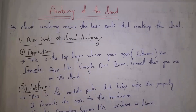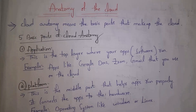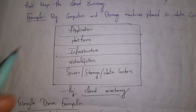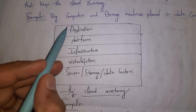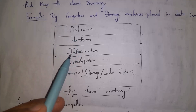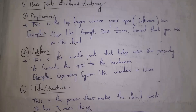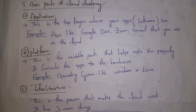Next I will explain the anatomy of the cloud. Anatomy refers to the basic parts that make up the cloud. There are five parts: application, platform, infrastructure, virtualization, and server/storage/data center. The first part is the application layer — the top layer where our apps run. Examples include Google Docs, Zoom, and Gmail running in the cloud.